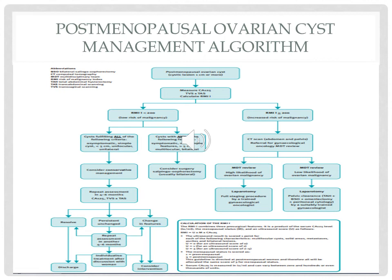If the RMI is greater than or equal to 200, refer for CT scan to identify omental metastasis, hepatic metastasis, ascites, lymph node enlargement, and obstructive uropathy. Then refer to an MDT. If assessed as high risk of malignancy, the patient should be referred to a gynae-oncology center for total abdominal hysterectomy, bilateral salpingo-oophorectomy, omental biopsy, cytology, and pelvic and para-aortic lymphadenectomy if needed. If the RMI is high but risk is lower, the patient can be managed in the local gynae unit by total abdominal hysterectomy, bilateral salpingo-oophorectomy, omental biopsy, and cytology, usually through a midline incision to allow for adequate access.